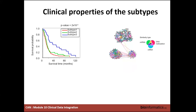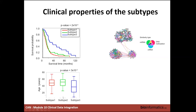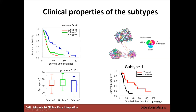Looking at clinical properties of the SNF subtypes: the authors were happy to find that one subtype has a longer survival time — a clear clinical distinction between groups. They also found that one subtype has lower patient age — it's a younger group. And treatment response is really different for one subtype: in subtype one, treated versus untreated groups are really distinct.